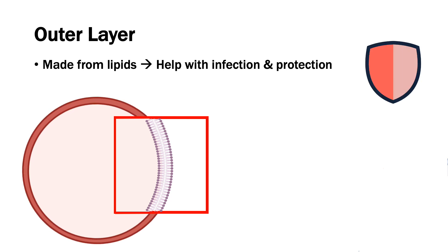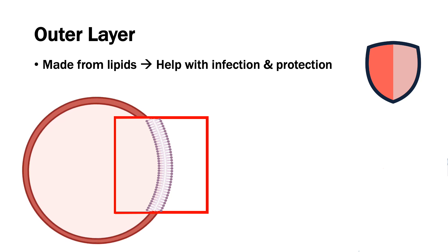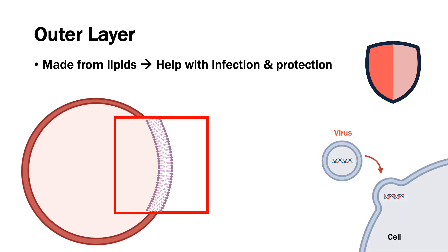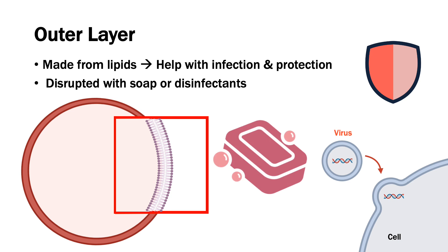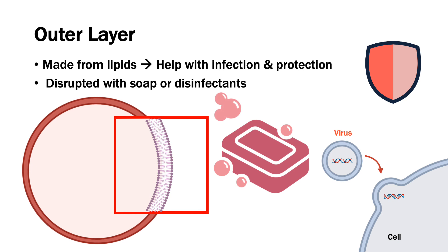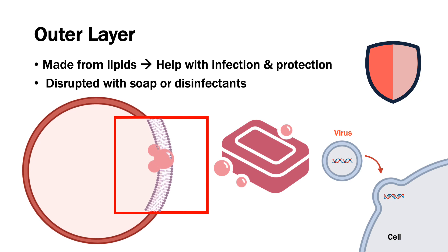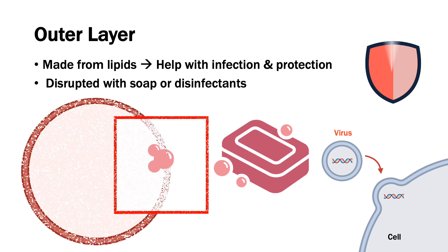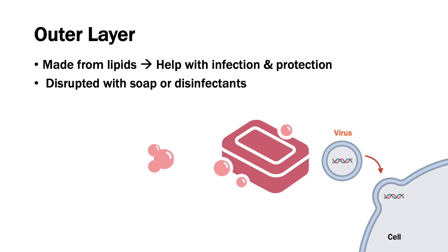The outer layer of our cells is similar to viruses and is arranged in roughly the same pattern. This is part of the reason why the virus can fuse with our cell and allow the viral genetic material to enter, causing an infection. However, this layer can be disrupted with soap or disinfectants, like household items we use to keep our surfaces clean, like bleach. The soap molecules compete with the lipids and weaken the structure of the membrane. Washing our hands with soap and water can totally dissolve this outer layer and destroy the virus — that's why washing our hands with soap is so important.